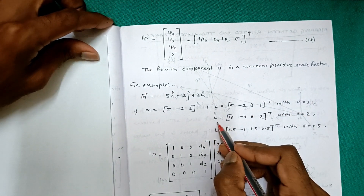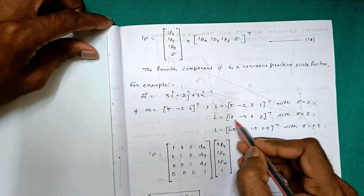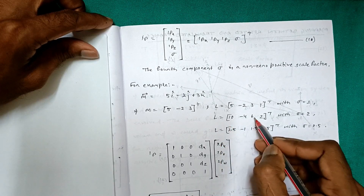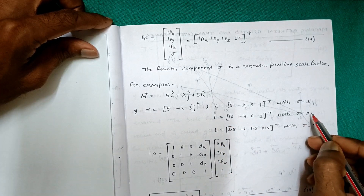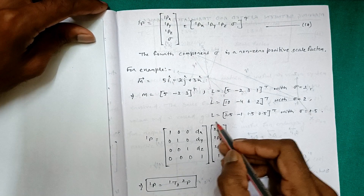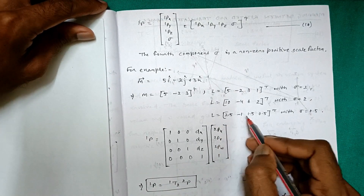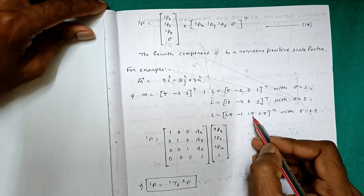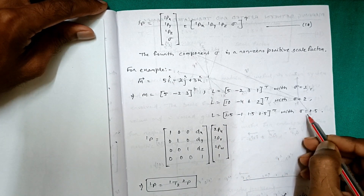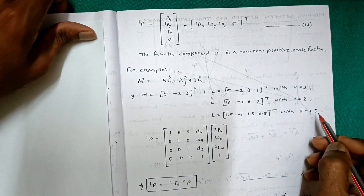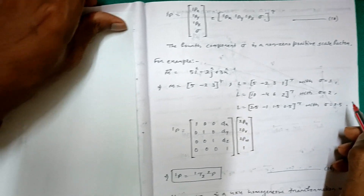Further examples of the scale factor: [10, −4, 6, 2] transpose with sigma equal to 2 represents the same vector, as does [2.5, −1, 1.5, 0.5] transpose with sigma equal to 0.5. This illustrates how the same physical vector can be represented with different values of sigma.